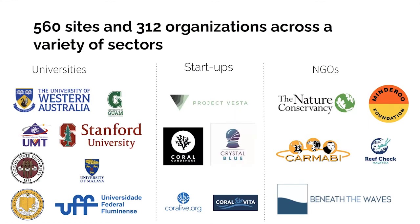So far the platform has been used by a ton of different organizations. We have about 560 sites and about 312 organizations across a variety of different industries — some of the most prominent universities on the planet with active marine research, a lot of startups, coral nurseries, Project Vesta working on enhanced weathering for accelerating carbon capture through alkalinity enhancement, and a whole bunch of NGOs. A variety of different companies are using the platform right now, and we just want to continue to serve them and build features they'll be able to use.